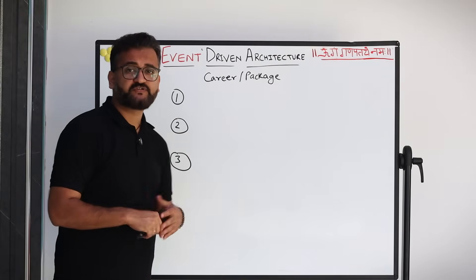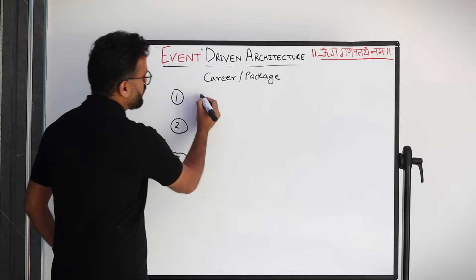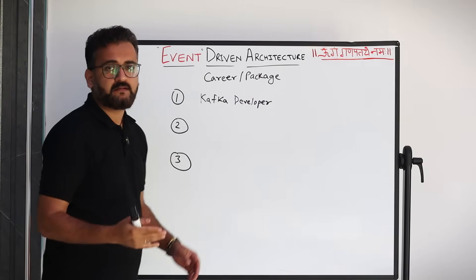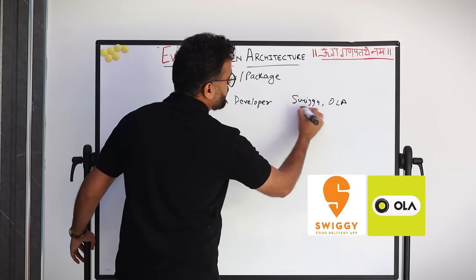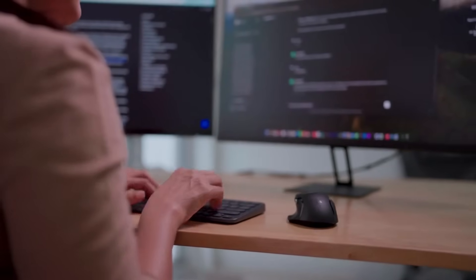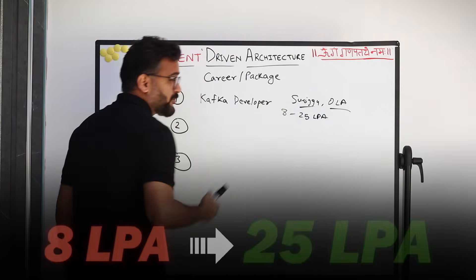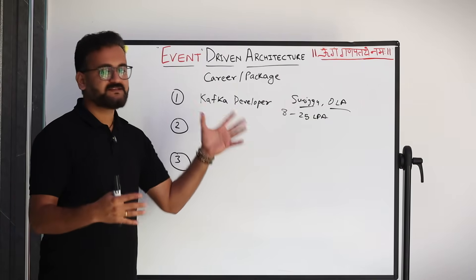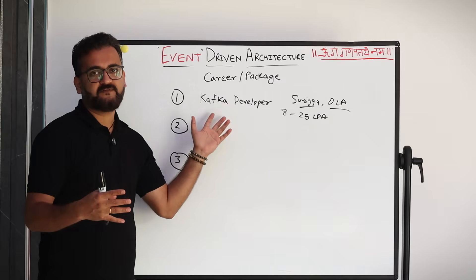Coming to career options, while there are multiple roles where this skill can be used, the most prominent one is Kafka developer. This is very actively hired by product-based companies like Swiggy, Ola, and similar companies — they always actively look for someone with development experience in Apache Kafka. The salary range could be anywhere between 8 to 25 LPA. These are approximate numbers; the package varies, but this range is a good reference if you have experience in Kafka development or are applying for a Kafka developer role.